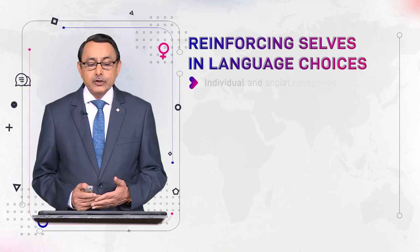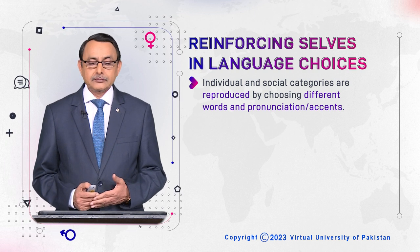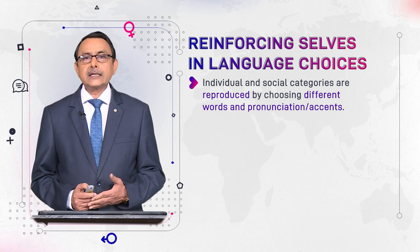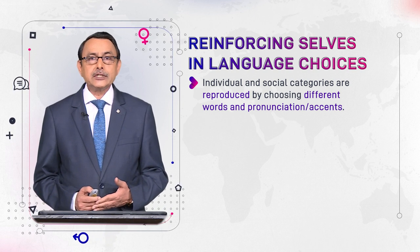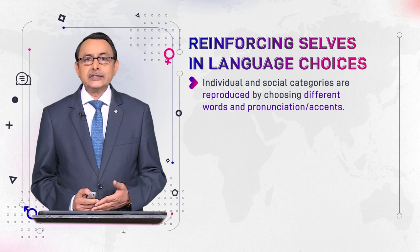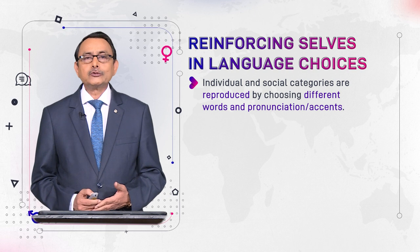When we define ourselves through discourse or language used in particular COPs or multiple COPs, the next question is how that meaning is strengthened, supported, reproduced, or reinforced. This module will explain this point. Individual and social categories are reproduced by choosing different vocabulary and different accents or pronunciations. This is what we mean by language use, and now we are opening up this relationship of language use with our social identity and social selves.